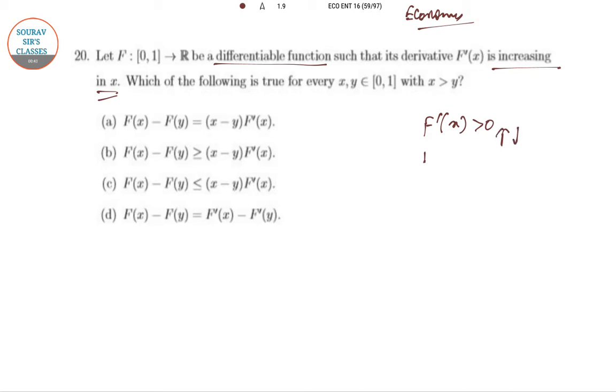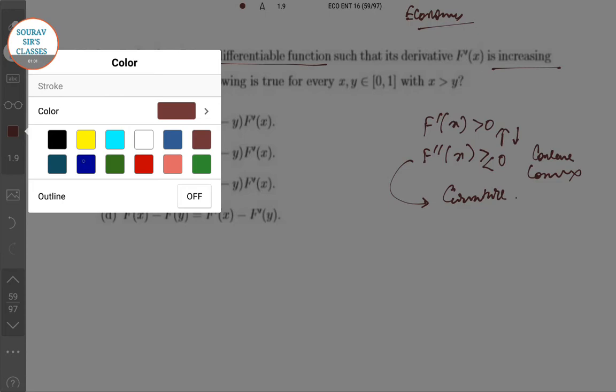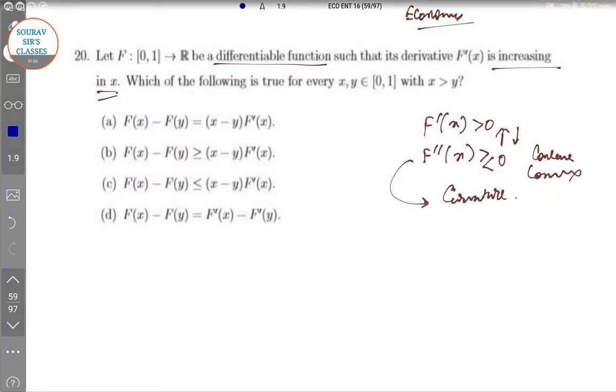The second order derivative, whether less than or greater than 0, tells you about the function's concavity or convexity, which is also called curvature. Now, getting into the question...